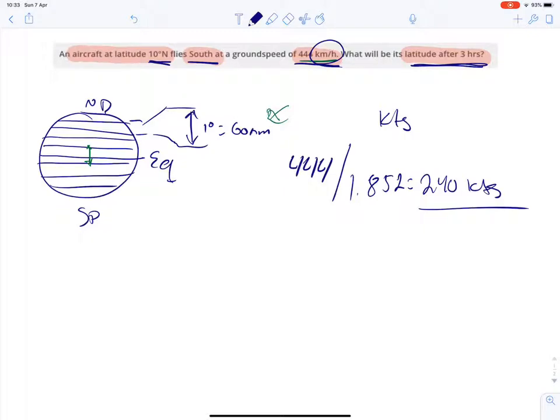All right, so in three hours, since it's flying for three hours, we need to multiply 240 knots by three hours to get the total distance it will travel. The total distance would be